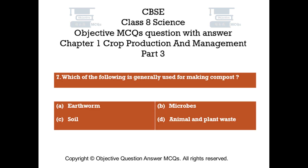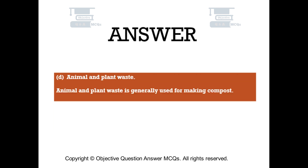Question number 7. Which of the following is generally used for making compost? Option A: Earthworm. Option B: Microbes. Option C: Soil. Option D: Animal and plant waste. The right answer is option D — Animal and plant waste. Animal and plant waste is generally used for making compost.